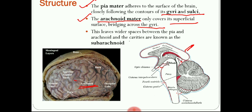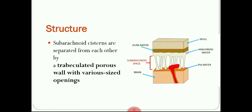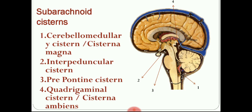Although the cisterns are described as separate spaces, they are actually not separate — they are continuous, but only separated by trabeculated porous walls with openings of various sizes. Through these porous openings, CSF flows. There are four major cisterns, and apart from these there are some minor or smaller cisterns.